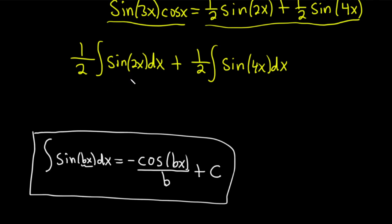Let's apply it here. We're just going to have 1 half and a negative cosine of 2x all over 2. And then another negative here, 1 half cosine of 4x all over 4, right? So basically, we're just dividing by the number and writing cosine with a negative in front of it, plus c. So very powerful way to do it.